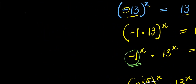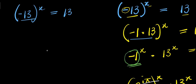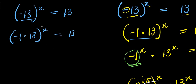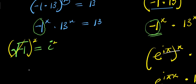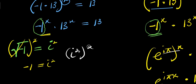Now that is one method of solving this exponential problem. Let's solve it using another method. We have negative 13 to the power x equals 13. I need to express this as negative 1 times 13, to the power x, equals 13. I distribute this to each of the terms, giving negative 1 to the power x times 13 to the power x equals 13. Now for this negative 1, we consider the identity: square root of negative 1 equals i. If we square both sides, negative 1 equals i squared. So we replace negative 1 with i squared, giving i squared, raised to the power x, times 13 to the power x, equals 13.